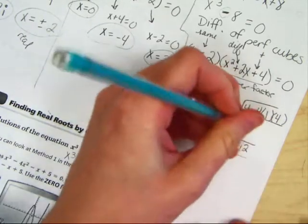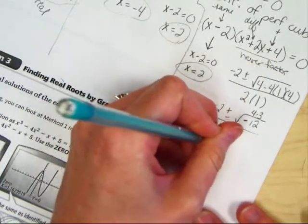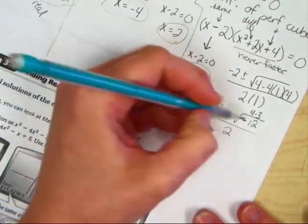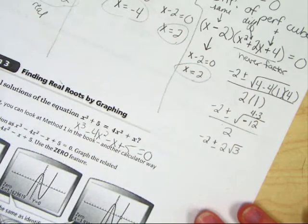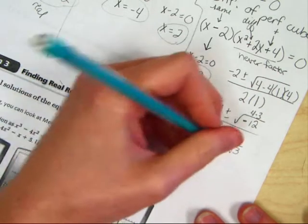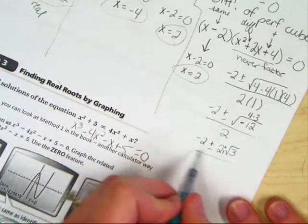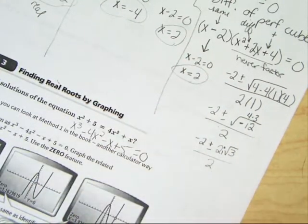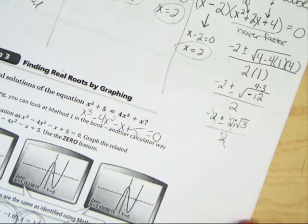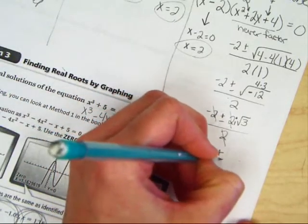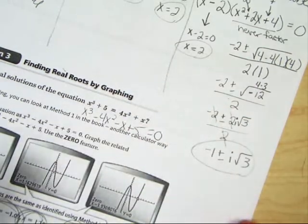And you remember this, 12 is made up of 4 times 3, so I get negative 2, plus or minus, the square root of 4, is 2, 3 left over, but wait, it was a negative square root, so you need an i. All these rules are coming all the way back to haunt you, aren't they? All over 2. 2's cancel out, because it's all part of them, and you get negative 1, plus or minus i√3, as your other two solutions.